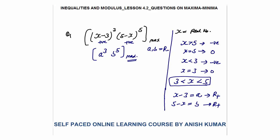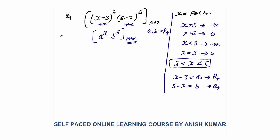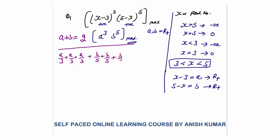This becomes the maxima-minima question from the previous lesson. The sum of a and b is constant at 2. To maximize a³ · b⁵, I divide a into 3 equal parts — each a/3 — and divide b into 5 equal parts — each b/5. That gives 8 terms in total whose sum equals 2.